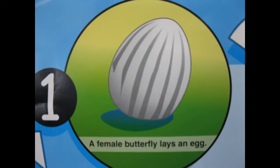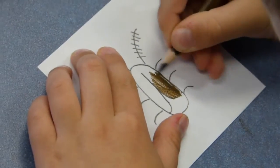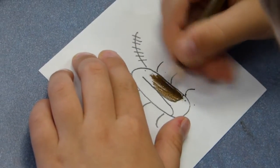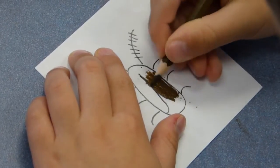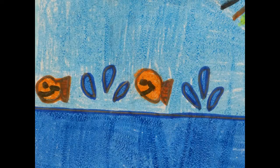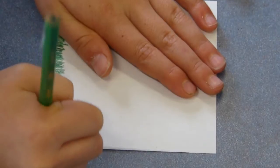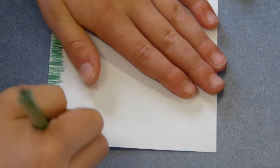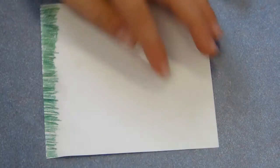I know that a butterfly starts from an egg. I know that a whale shark isn't really a whale. I know that a cockroach can hold its breath for over an hour. I know that sharks are very fast swimmers. I know that a caterpillar changes into a butterfly. I know that animals always live and also die.